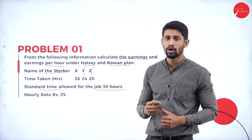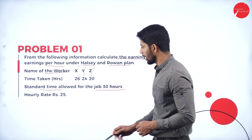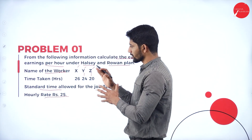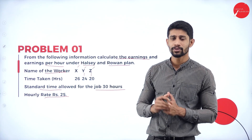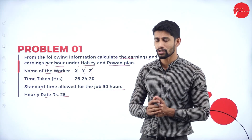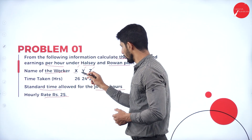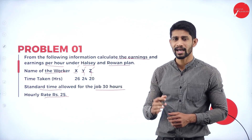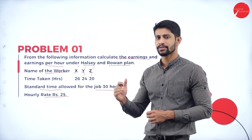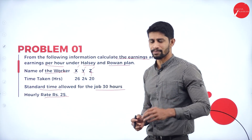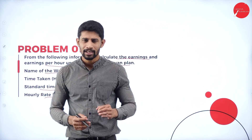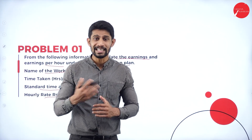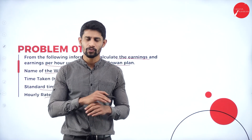The hourly rate is 25 rupees. Using this information, we are supposed to find out the total earnings of Mr. X, Y, and Z, and also the hourly earning of each. It's very simple — if you know four things, you can easily solve the problem without worry.